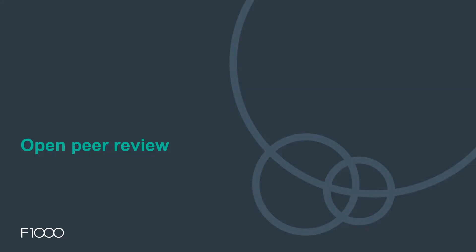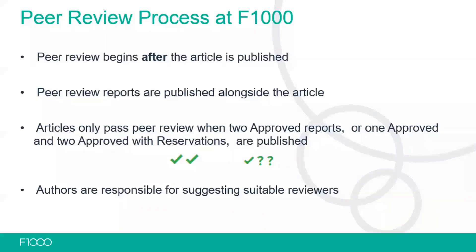Finally, a couple of slides on the open peer review process, as there were lots of questions about this and how to select appropriate reviewers. Looking at the peer review process: peer review begins after the article is published. The peer review reports are published alongside the article so they can be easily read by anybody. Articles only pass peer review when two approved reports are received, or one approved and two approved with reservations. Authors are responsible for suggesting suitable reviewers and can use our reviewer suggestion tool.